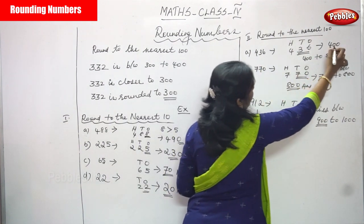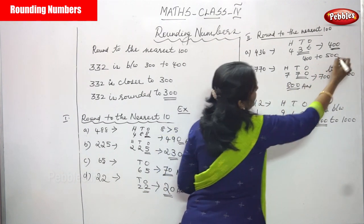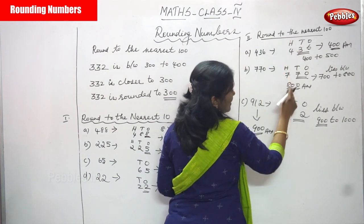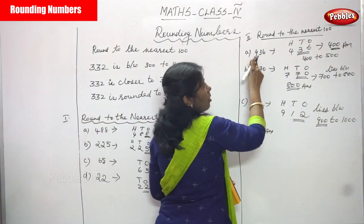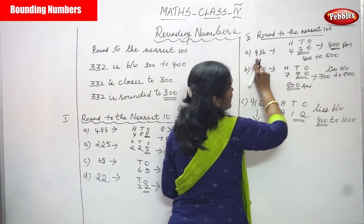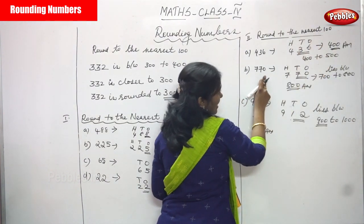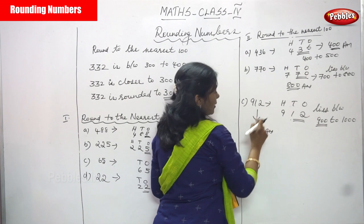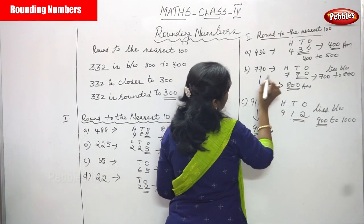Let me repeat: for 436, nearest 100 is 400. For 770, round to the nearest 100 is 800. For 912, the answer is 900 — round to the nearest 100 is 900. Okay, that's it.